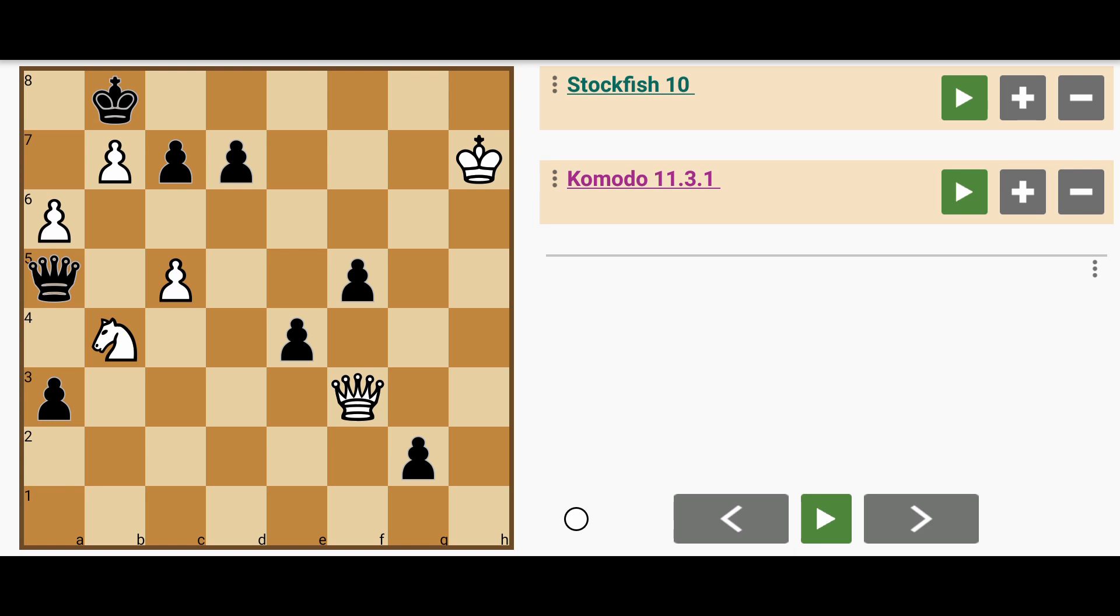White's queen on f3 is also in a position to be captured, but there's actually a mate in four here. The solution might surprise you.